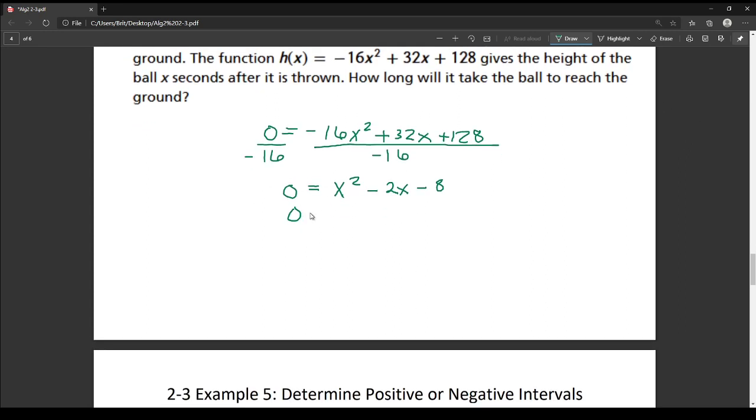So I'm going to go ahead and use my double bubble to set up two sets of parentheses. My x's fall down and my first sign falls down. Now to get a negative 8, I need opposite signs. So I'm going to put a plus in the second set of parentheses. Then I need to find the factors of 8 that subtract because the minus here, so they have a difference of 2. So my factors of 8 are 1 and 8 and 2 and 4. So 8 minus 1 is 7 and 4 minus 2 is 2, so I'm going to be using this one.